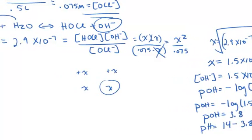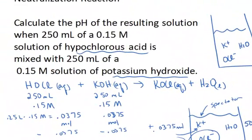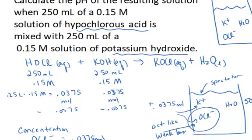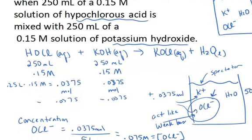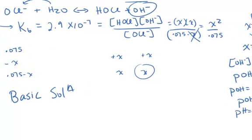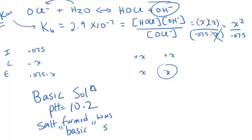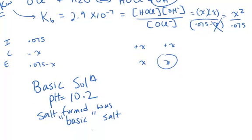So when we have a neutralization reaction between a weak acid and a strong base in equal molar ratios, we end up with a salt that behaves as a base in solution due to the presence of the weak conjugate base partner of the acid. So in this case we end up with a basic solution. The pH was 10.2, which is in the basic range, and it's because the salt that was formed was what we call a basic salt — because it was the result of the ionization of the weak base.